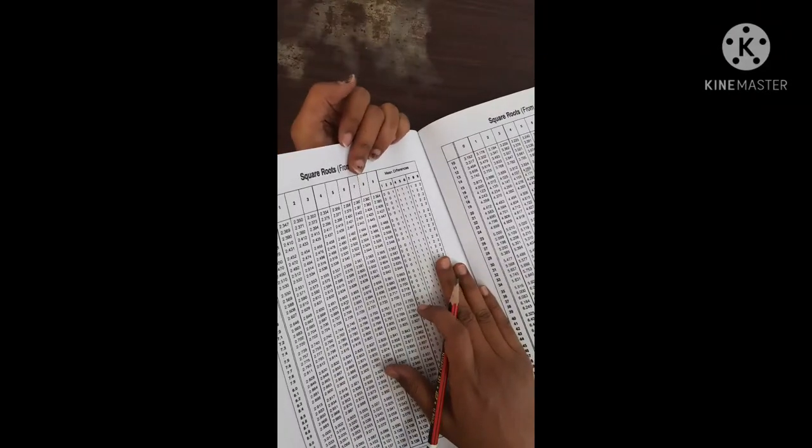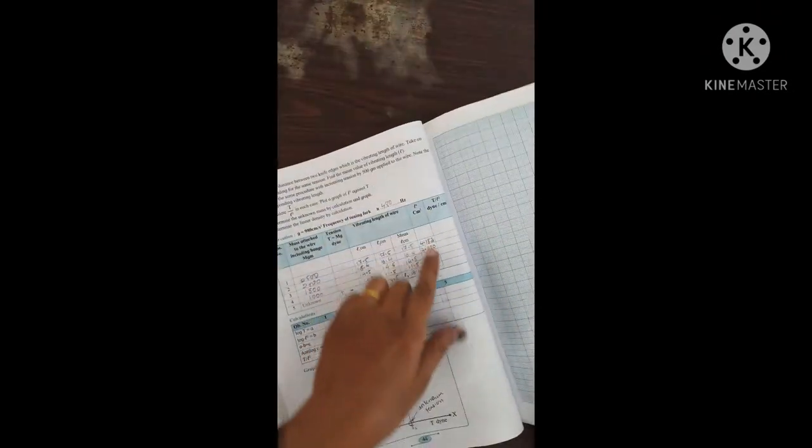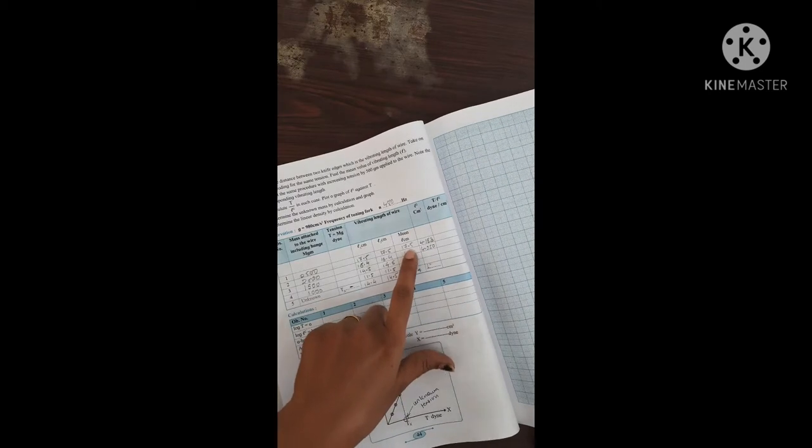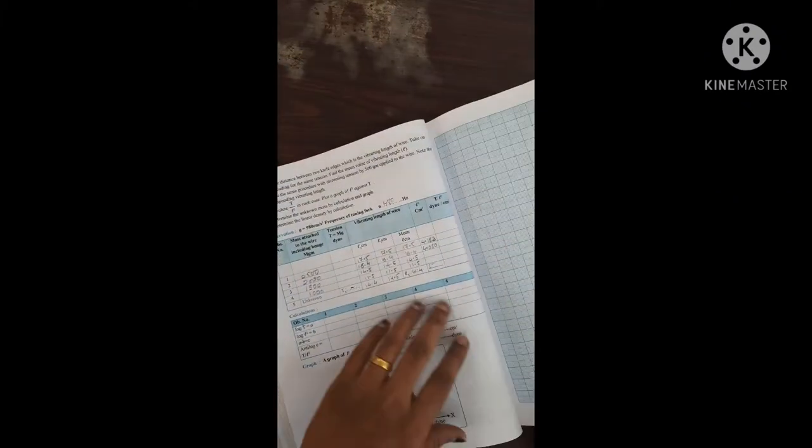Otherwise you have to multiply 17.5 into 17.5 and it will take lot of time. So it is better to see from the square root table.